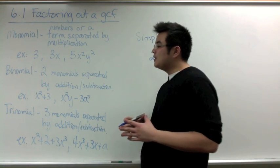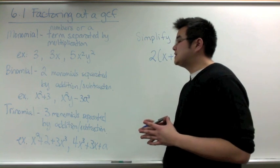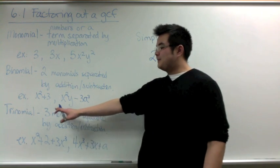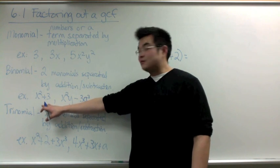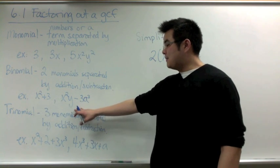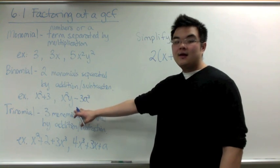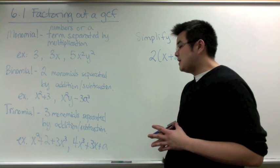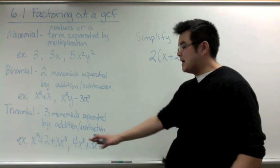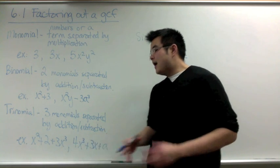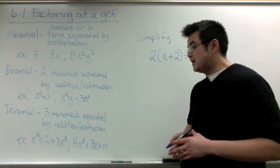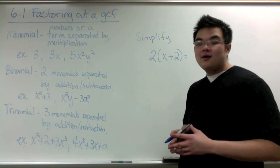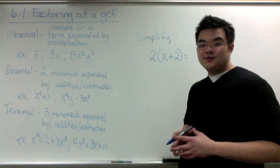A binomial is two monomials separated by addition or subtraction. Examples of binomials are x² + 3 and x²y − 3a³. A trinomial is three monomials separated by addition or subtraction. Examples are x² + 2 + 3x³ and 4x³ + 3x + a.